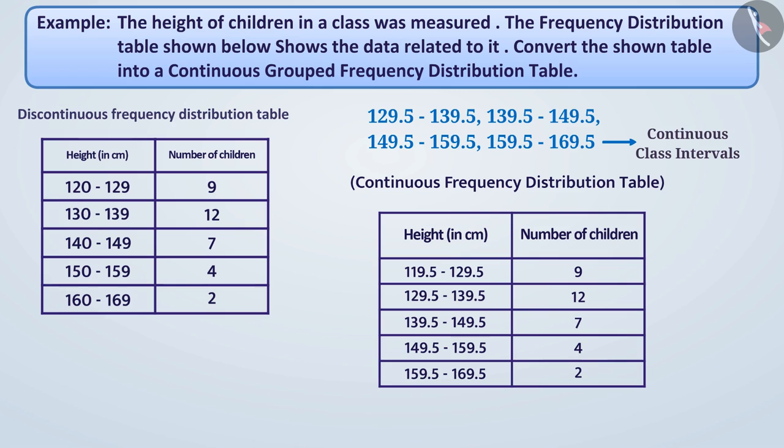Now, can you tell in which class interval 129.5 will be included? Think! Absolutely right! 129.5 is overlapping between the class intervals 119.5 to 129.5 and 129.5 to 139.5. And, we include overlapping observations in higher class intervals. So, the number 129.5 will be included in the class intervals 129.5 to 139.5.